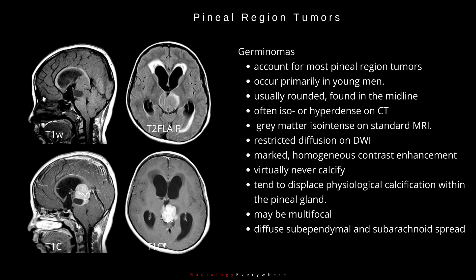Germinomas may be multifocal, the second commonest site being the hypothalamic region, associated with diabetes insipidus, which usually occurs only late in suprasellar astrocytomas. Germinomas show diffuse subependymal and subarachnoid spread, best appreciated on contrast-enhanced T1 images.